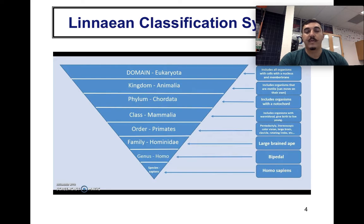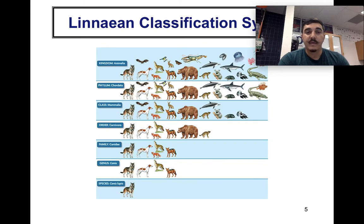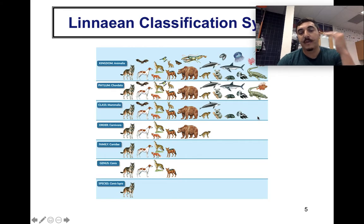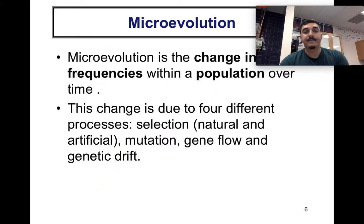Another example is Canis lupus — the wolf. Starting at Animalia, we eliminate organisms without a notochord like shellfish and jellyfish, then narrow to mammals, eliminating alligators and others, trimming down specifically to that species.